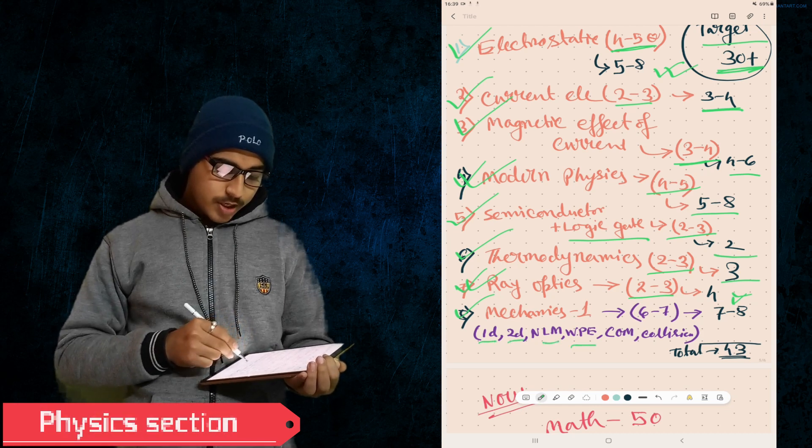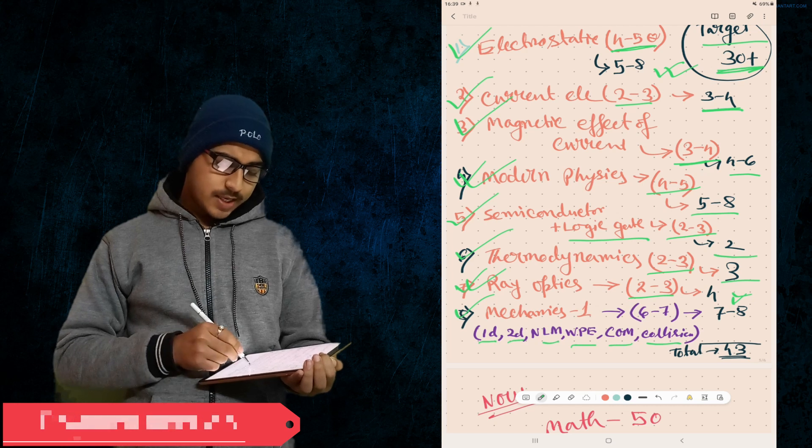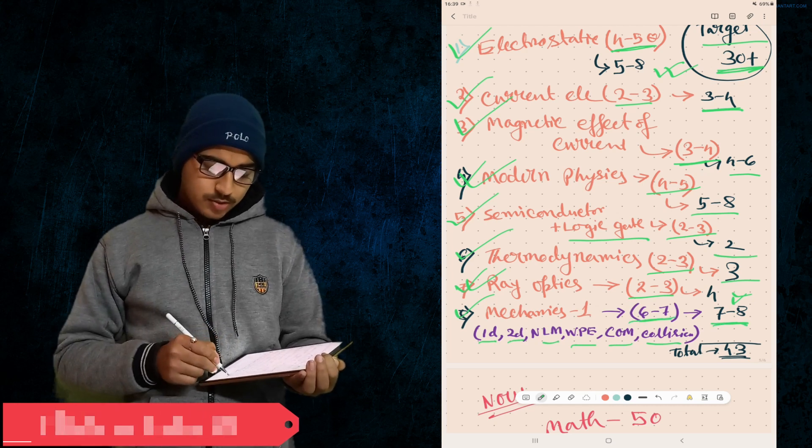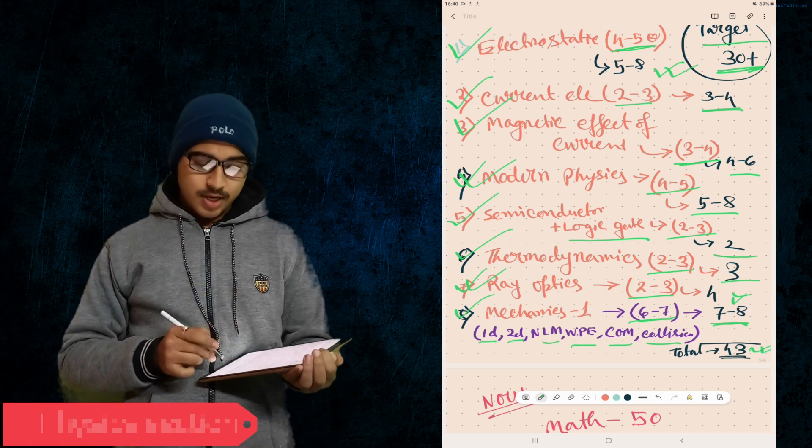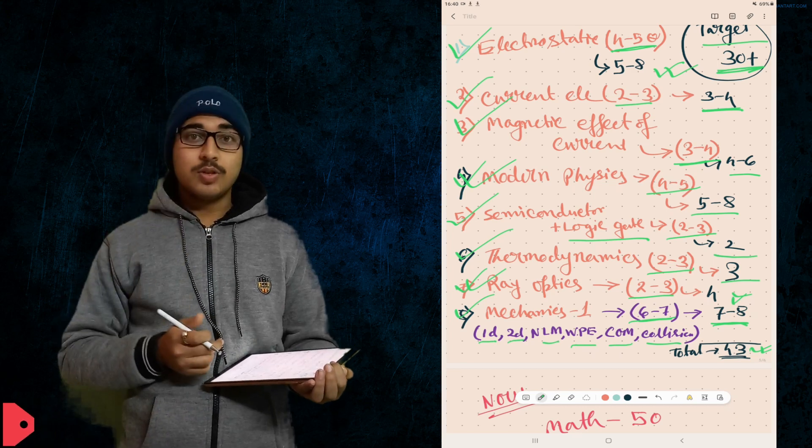In Mechanics - one D motion, two D motion, NLM, Work and Energy, Center of Mass and Collision - from these chapters you can get six to seven questions, more about seven to eight marks. Total 43 marks. Our target is 30 marks. We're getting 43 marks, so if you did some wrong and can't solve some questions, 30 marks is still fulfilling in Physics.